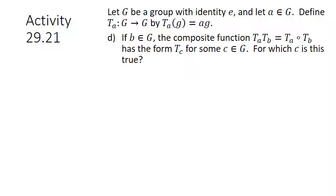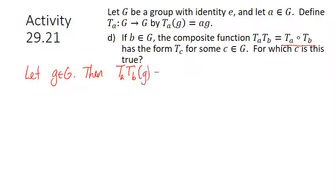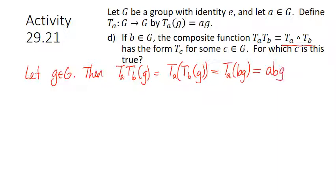Part D: if B is in G, the composite function T_A composed with T_B has the form T_C for some C in G. Let little g be in big G. Then T_A composed with T_B of g equals T_A of T_B of g equals T_A of B·g equals A·(B·g) equals A·B·g. This is T_{AB} of g. So C equals A·B — you can just multiply the subscripts.